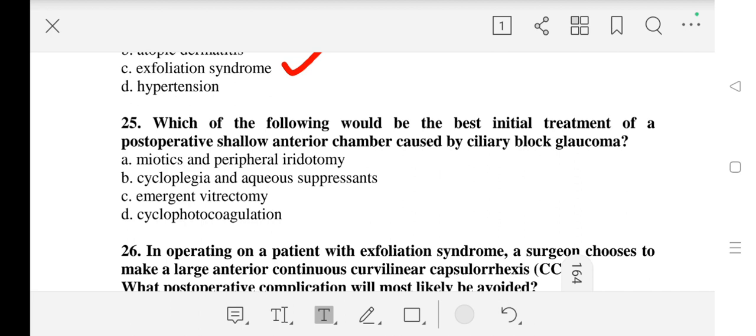Question number 25: Which of the following would be the best initial treatment of a postoperative shallow anterior chamber caused by ciliary block glaucoma? Our correct answer is B - cycloplegia and aqueous suppressants. Thank you.